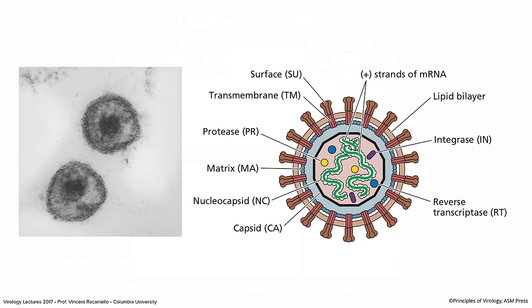Retroviruses are enveloped virus particles. The envelope contains glycoproteins to attach to host cells. For many, the glycoproteins are made up of two components: the surface (SU) and the transmembrane (TM). Below the membrane is a layer of protein called the matrix, or MA protein, which gives the envelope stability. Below that is a capsid made of capsid protein which, for some retroviruses, looks icosahedral. Within the capsid is the viral genome — actually two strands of plus RNA coated with a protein called the nucleocapsid (NC) protein. That whole capsid-RNA assembly is the nucleocapsid.